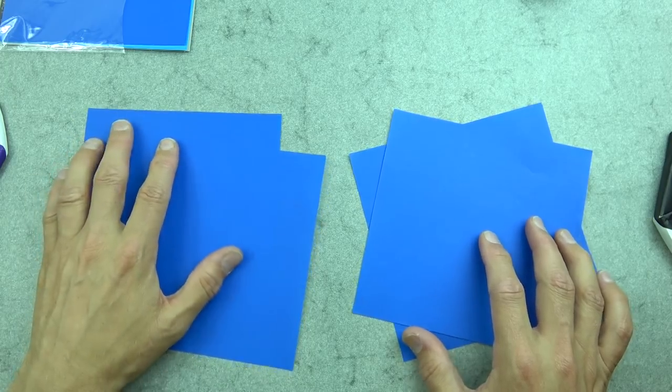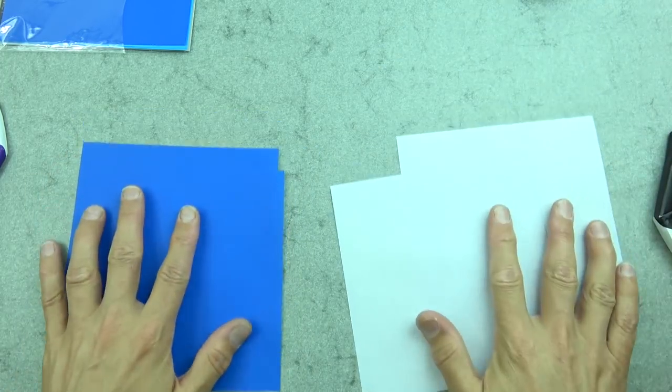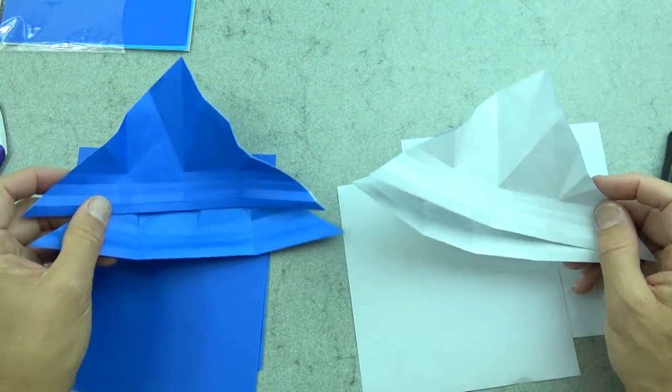So for this one I'm going to use two sheets of blue and just turn over the other sheets so that I have two sheets of white. And we need to make four identical modules, so I'm going to now show you how to do it.